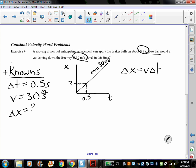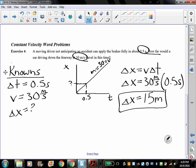Generally, a faster way to solve this kind of problem would be to use algebra. So delta x equals v delta t. If we fill in what we know, we know that the velocity is 30 meters per second and we know that the time is 0.5 seconds. So 30 times 0.5, we now know that our answer is going to be 15 meters.